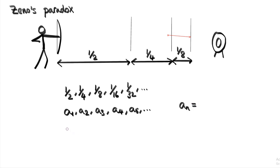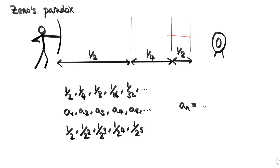We can guess what this formula is by looking at patterns in the numbers that form the sequence. Looking at the denominators, we can see that 4 is 2 times 2, and that 8 is 2 times 4, and that 16 is 2 times 8 — so each time the denominator is getting multiplied by 2. This can be expressed in terms of powers of 2. So the first term can be written as 1 over 2, the second as 1 over 2 squared, the third by 1 over 2 cubed, and the fourth by 1 over 2 to the 4. The nth term in this sequence is therefore 1 over 2ⁿ.